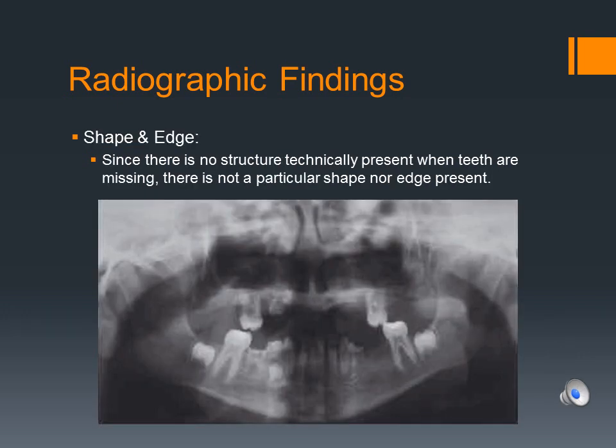The edge of a missing tooth is non-existent since there is no structure present in the location of a missing tooth, besides the maxillary and mandibular bone and possibly a neighboring tooth that has begun to drift or tip into the unoccupied position within the arch. Since there is no structure technically present when teeth are missing, there is not a particular shape present. The unoccupied space evident on the radiograph is typically lacking the shape of the particular missing tooth.